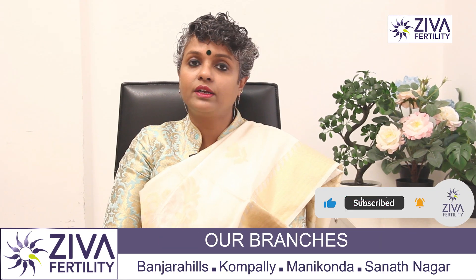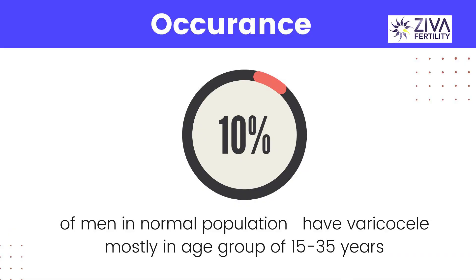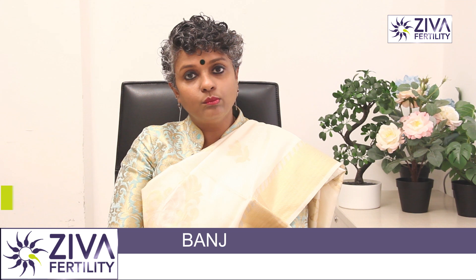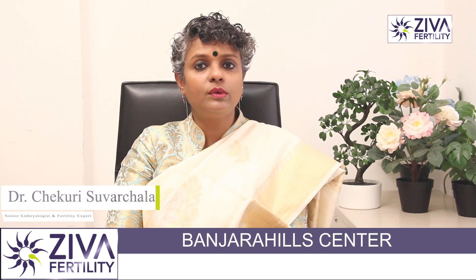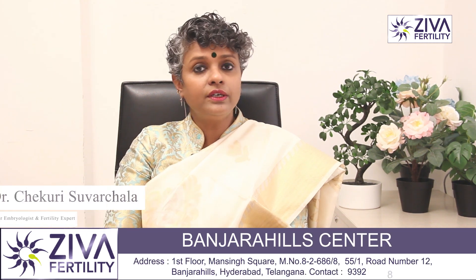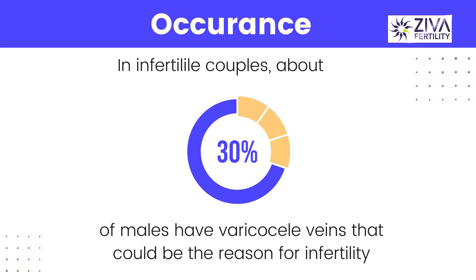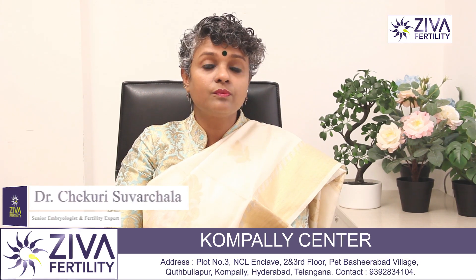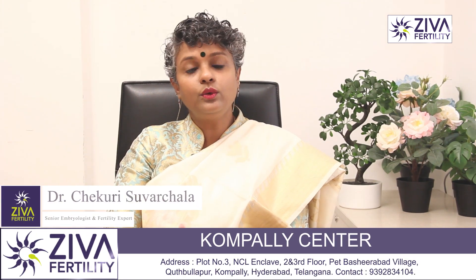What is the occurrence of varicocele? About 10% of the normal male population have a varicocele problem, depending on severity. The typical age group is around 15 to 30–35, and it could worsen if the problem is left unattended. In infertile couples, about 30% of males have been reported to have varicocele veins, which can cause damage to sperms and therefore lead to infertility.